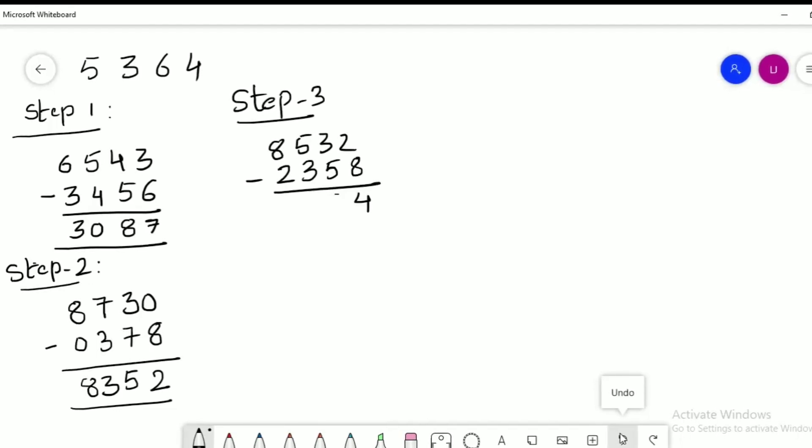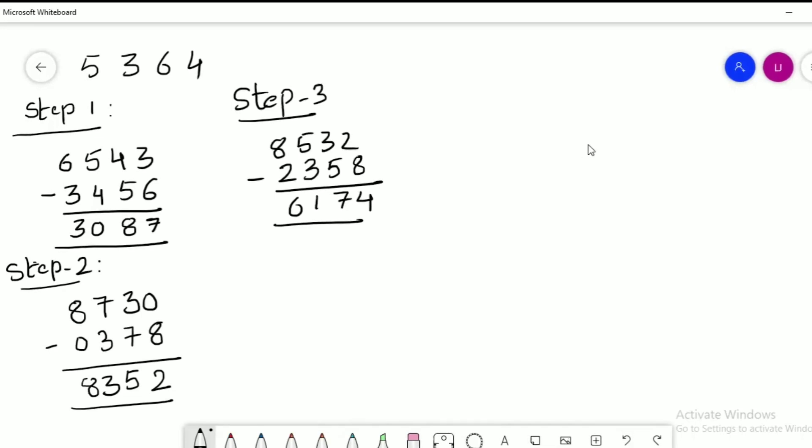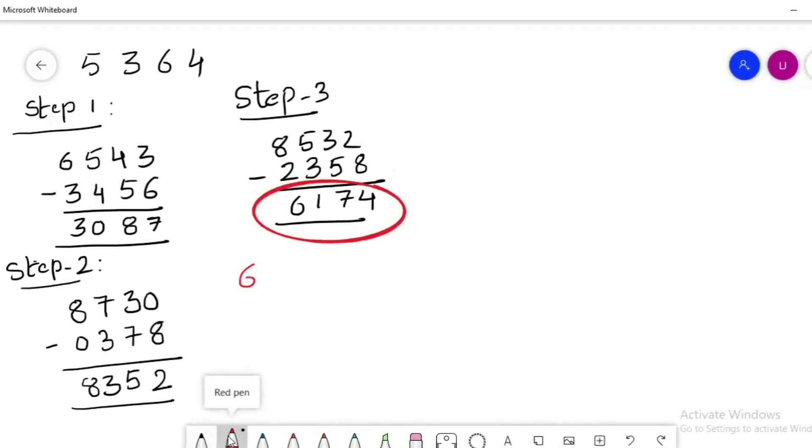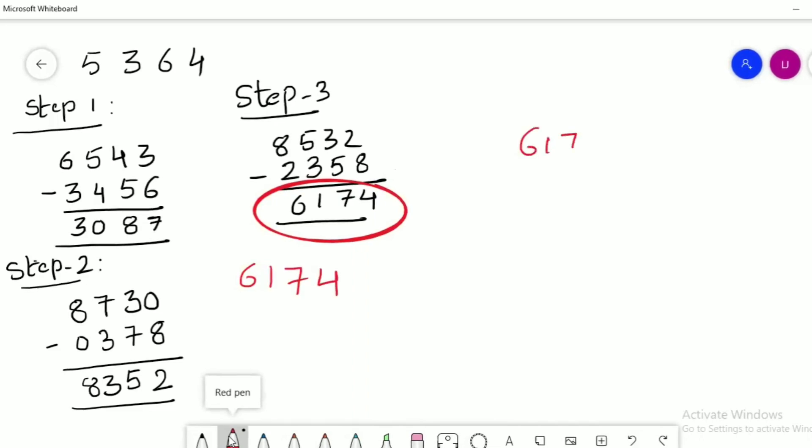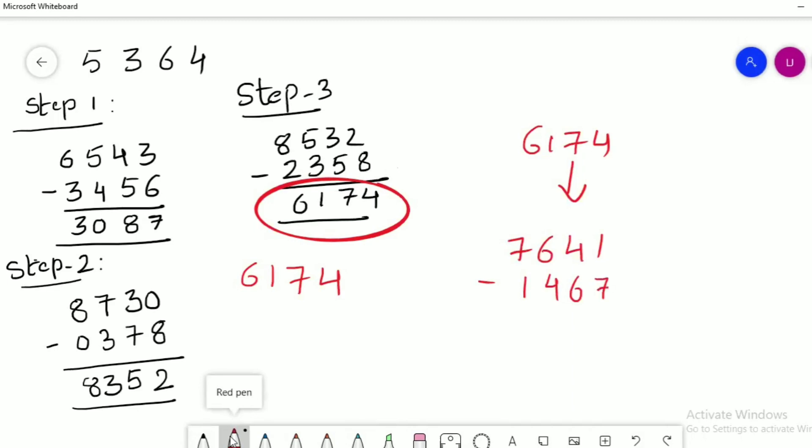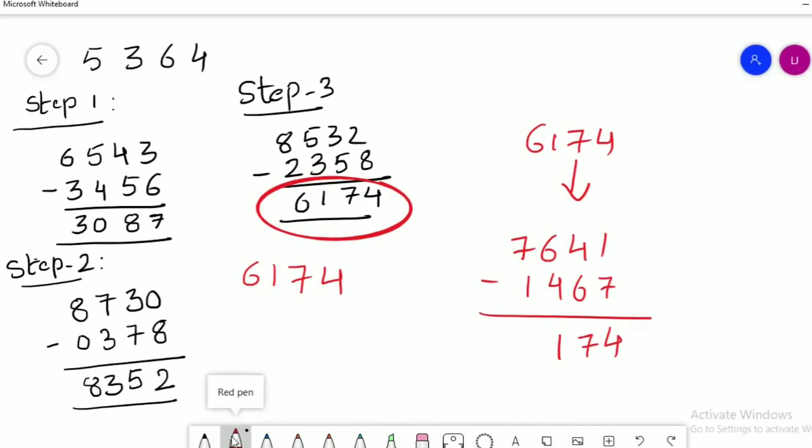Now step three. Again I arranged the digits in ascending and descending order and subtracting the smaller one from the bigger one. See, the answer is 6174. What is special about this number? If we repeat again the same procedure, we will get the same answer: 6174.